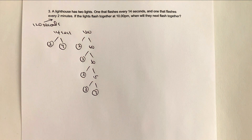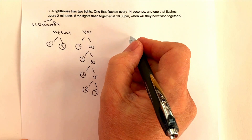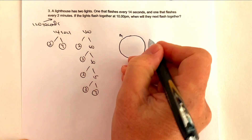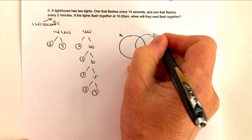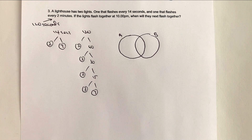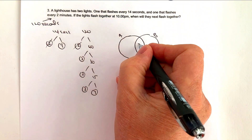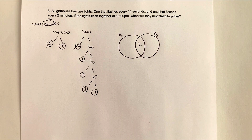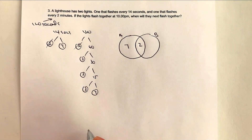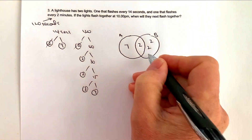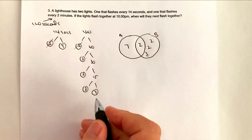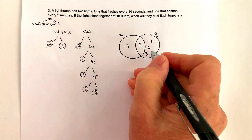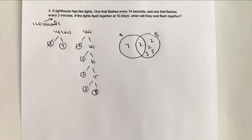Let's write that out as a Venn diagram. We've got lighthouse light A, which flashes every 14 seconds, and light B, which flashes every 120 seconds. Looking for common numbers: the number 2 is common to both, so that goes in the middle. There aren't any other common numbers. So 7 goes into A's side, and from B we have two more 2s, a 3, and a 5.